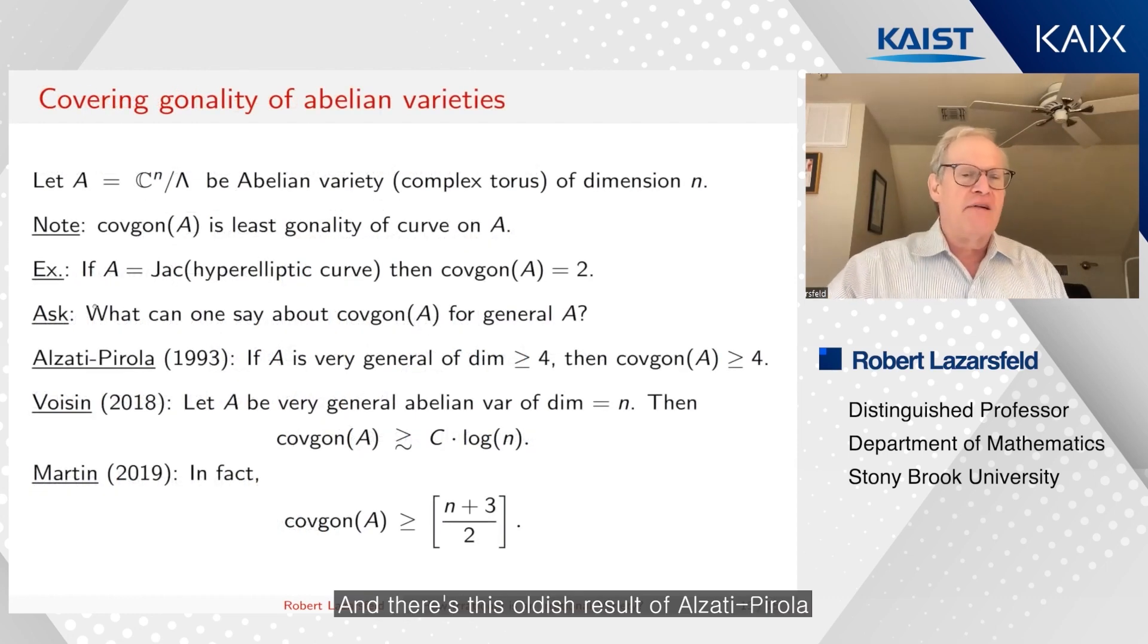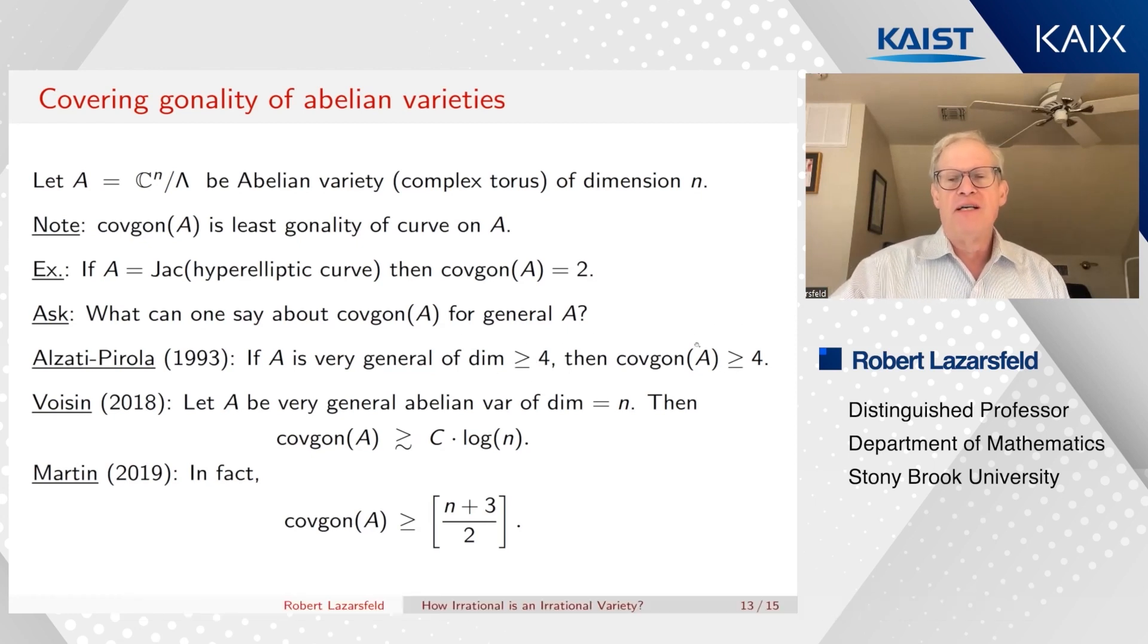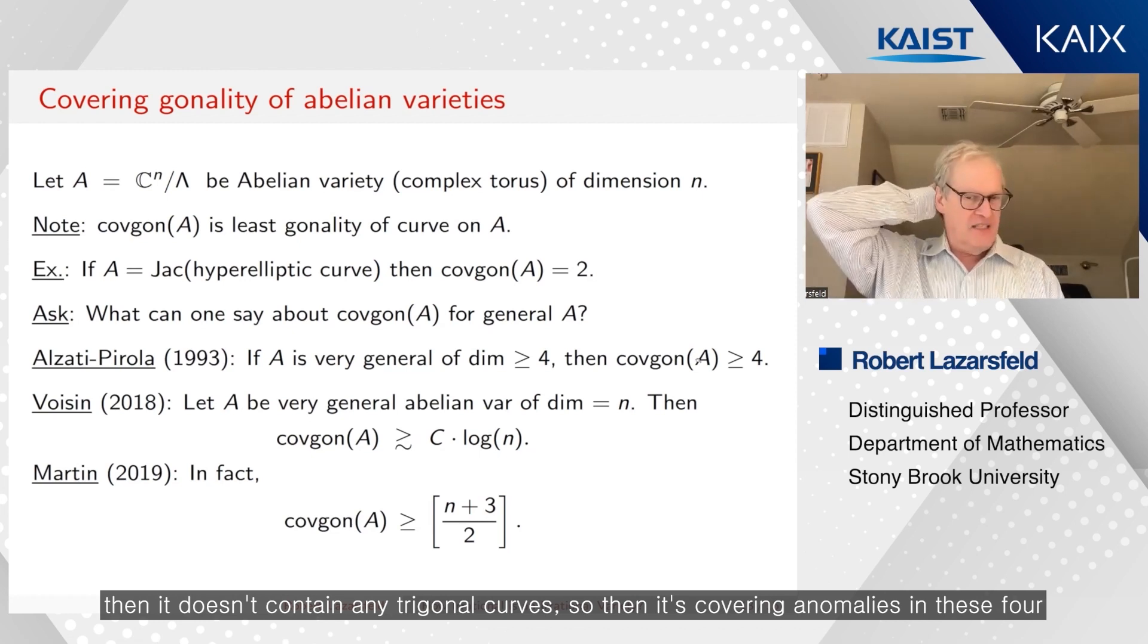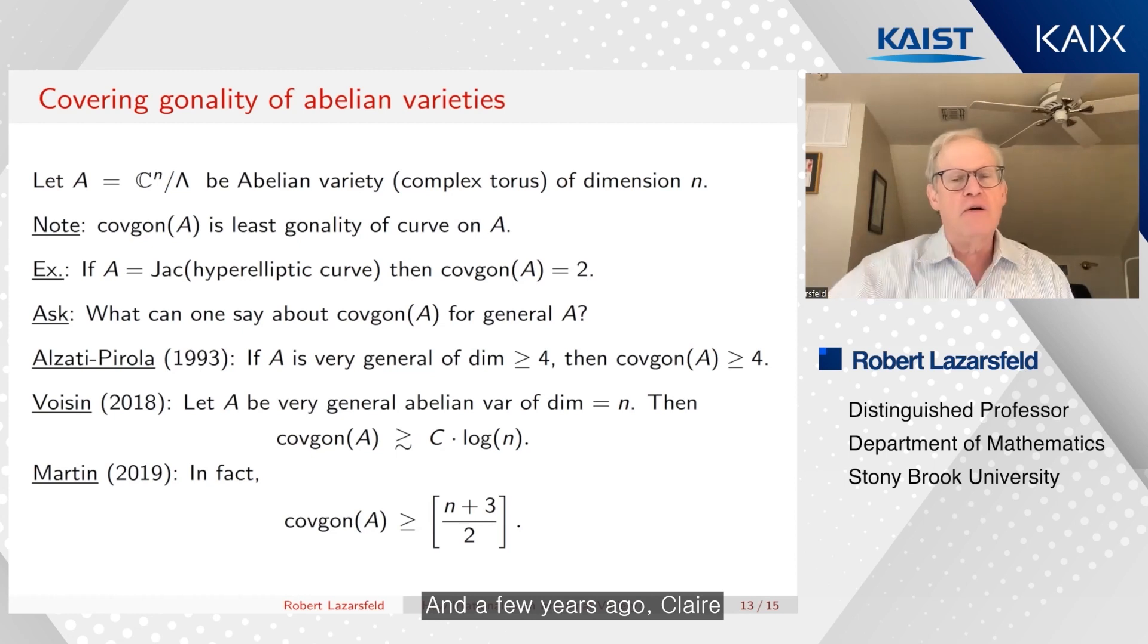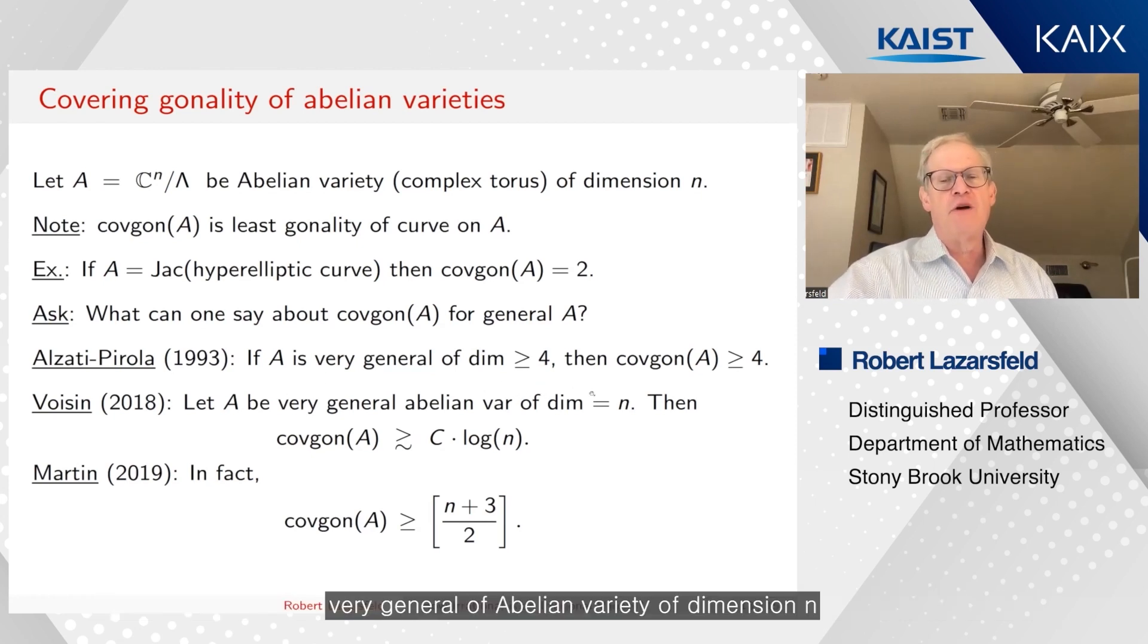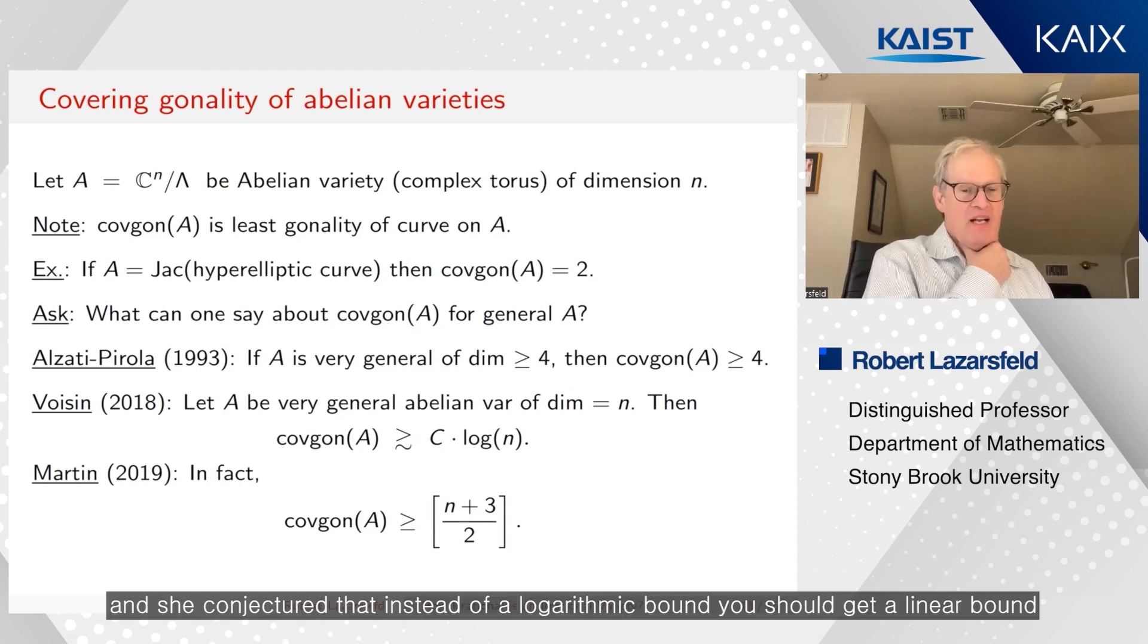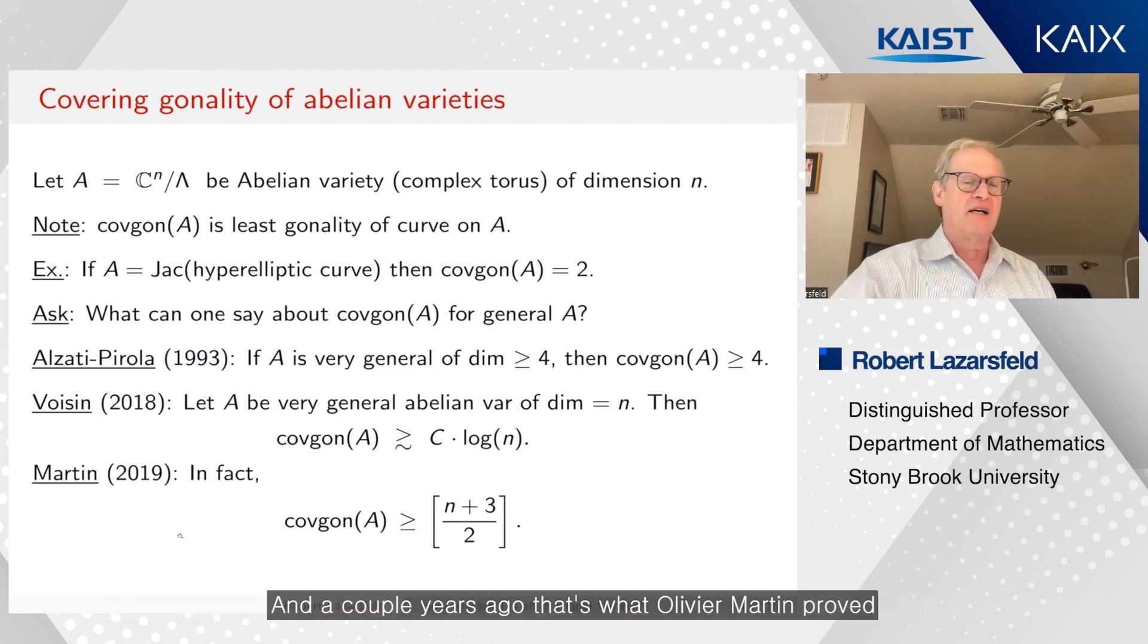And there's this old result of Alzati and Pirola who showed that if you take a very general abelian variety of dimension at least four, then it doesn't contain any trigonal curves. So then its covering gonality is at least four. And a few years ago, Claire Voisin found a nice way of generalizing their argument. And what she showed is that if you take a very general abelian variety of dimension n, then the lowest gonality family of curves that covers it has a gonality roughly the logarithm. And she conjectured that instead of a logarithmic bound, you should get a linear bound. And a couple years ago, that's what Olivier Martin proved.